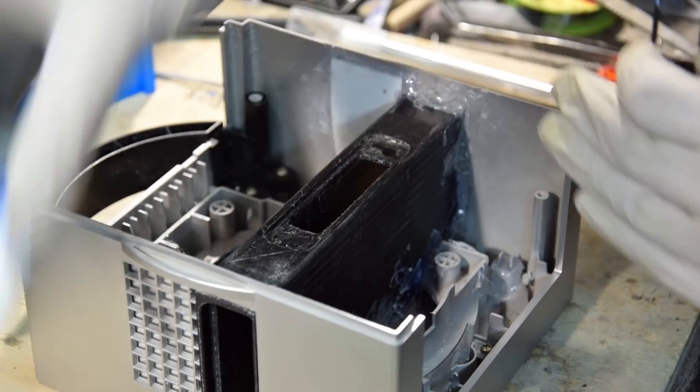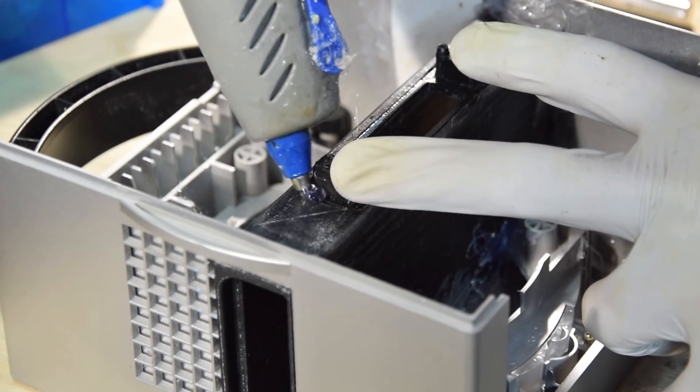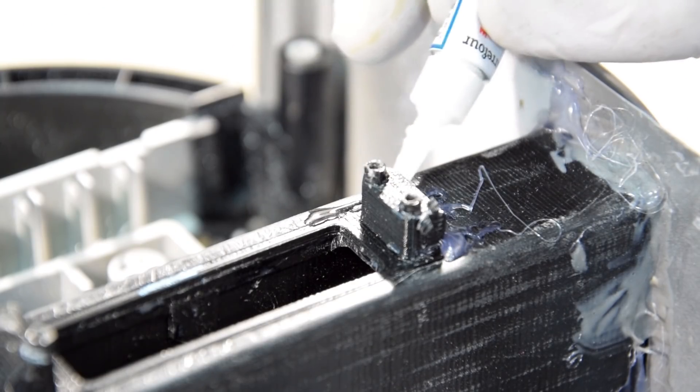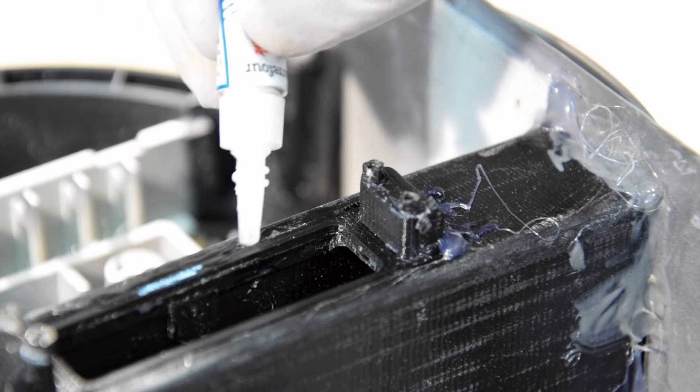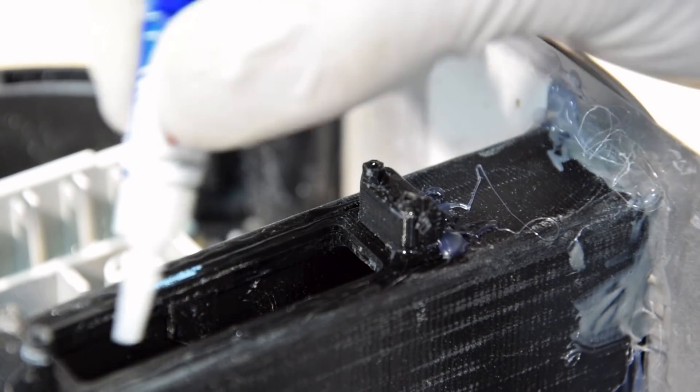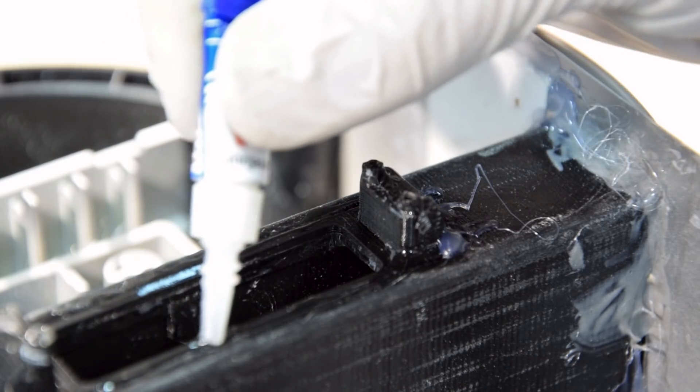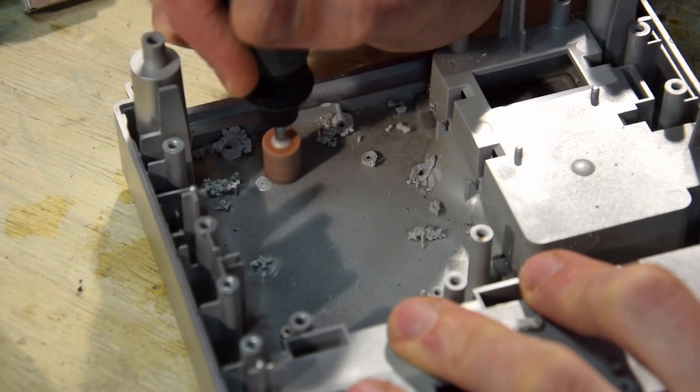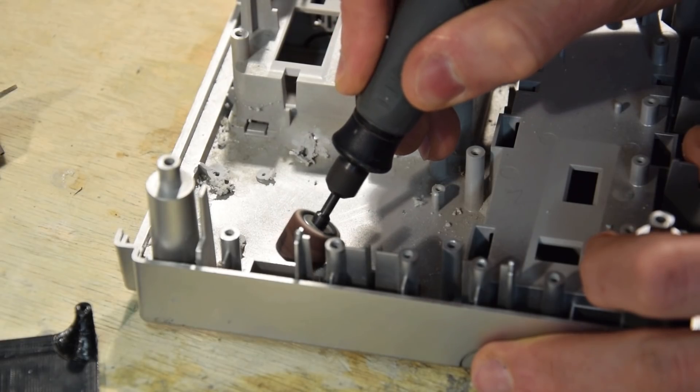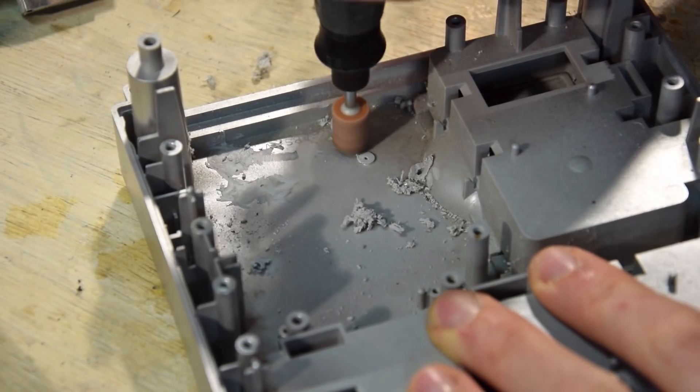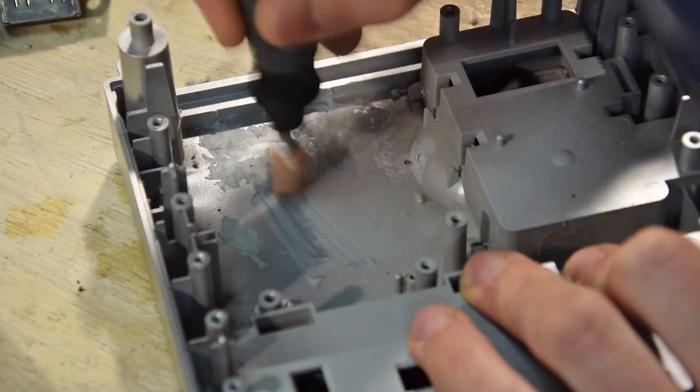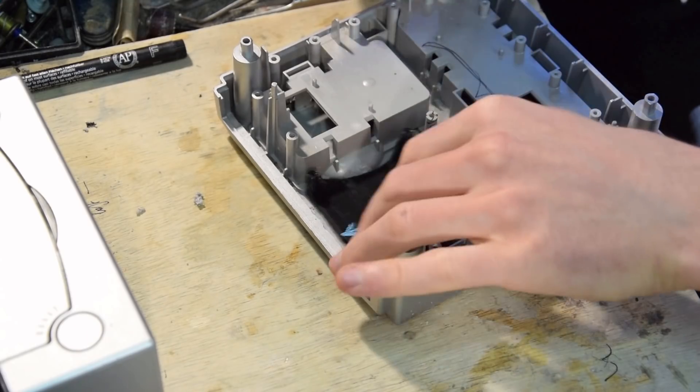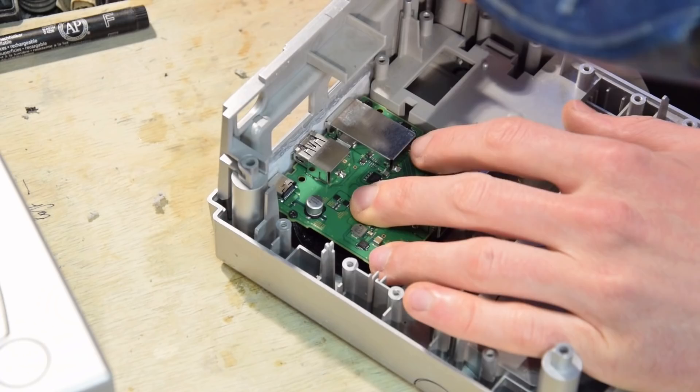After verifying that the screw holes line up, we can super glue the 3D printed screw posts where we intended them to be. Since there is a flat contact surface between the two pieces, they should be bonded together strongly. The Switch dock circuit board will fit perfectly in the cutout where the GameCube power regulation board used to be. With the added height of the 3D printed support, the ports will be where we want them. We just need to remove bits of plastic to clear space to glue in the 3D printed support.